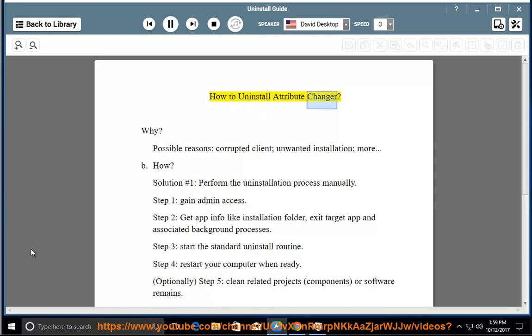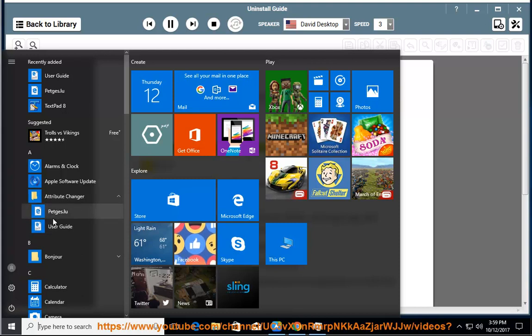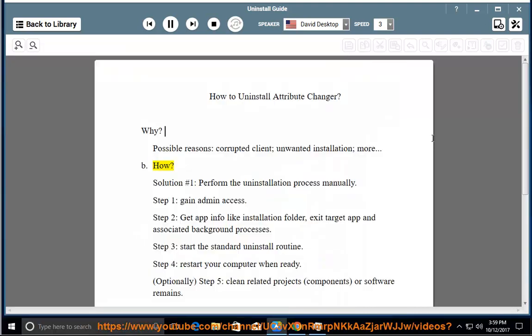How to Uninstall Attribute Changer. Why? Possible reasons: corrupted client, unwanted installation, more. How? Solution #1: Perform the uninstallation process manually. Step 1: Gain admin access. Step 2: Get app info like installation folder, exit target app and